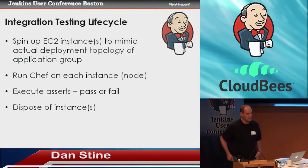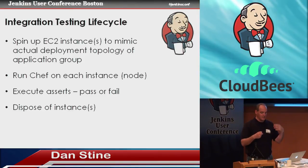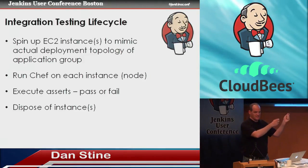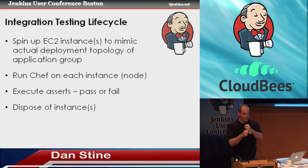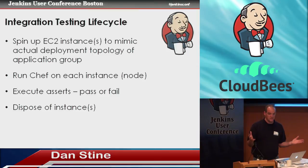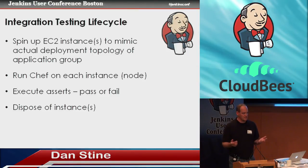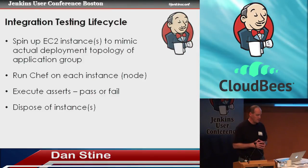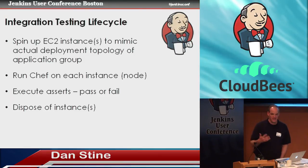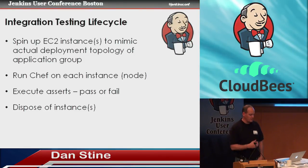What does the integration test lifecycle look like? We spin up EC2 instances at the application group level. So if there's a UI and a REST service and a message processor meant to be deployed on three separate instances in real environments, we spin up three separate EC2 instances, configure them, and test them. If applications are co-located, we put them on the same server and verify they're running on different ports. We run Chef on each node, make assertions — is this service running? Is this directory created? Are we getting the correct HTTP response on this port? — then throw away the instances after eight or ten minutes.